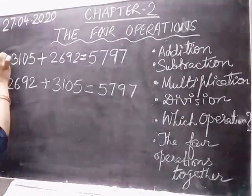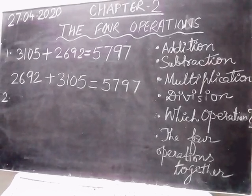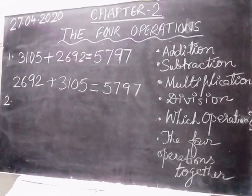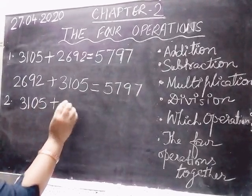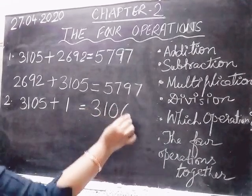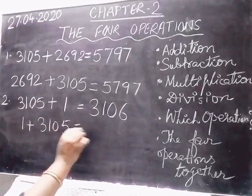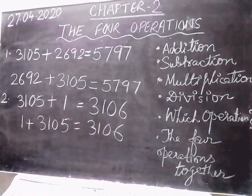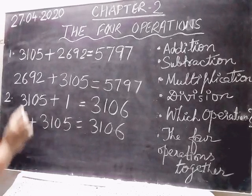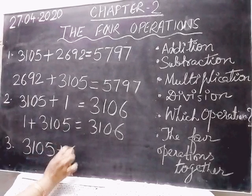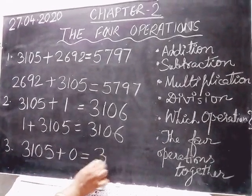Property number two: when we add 1 to any number, we get the successor of that number. For example, 3105 plus 1 equals 3106. Property number three: when 0 is added to a number, the sum is the number itself. For example, 3105 plus 0 equals 3105.